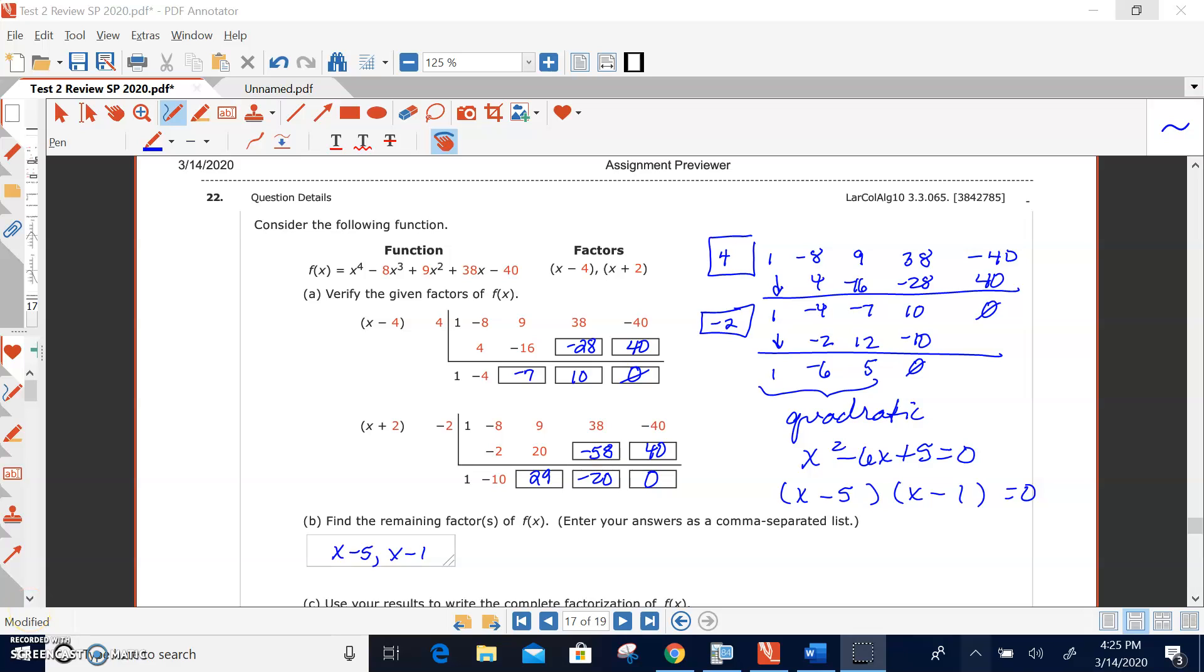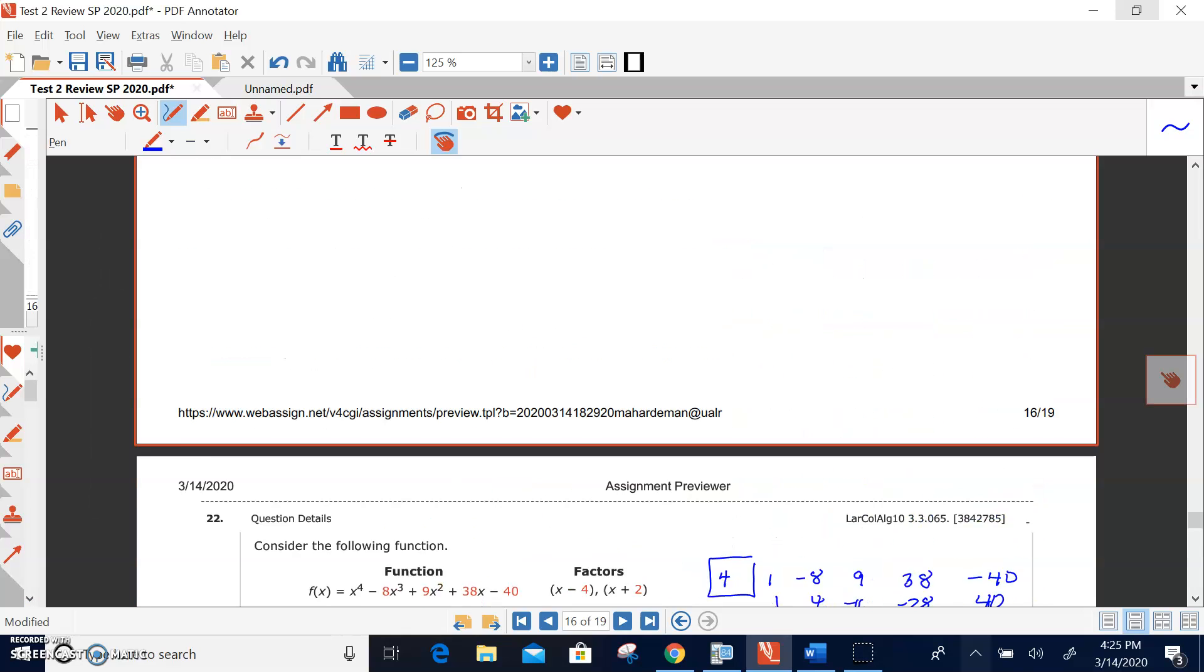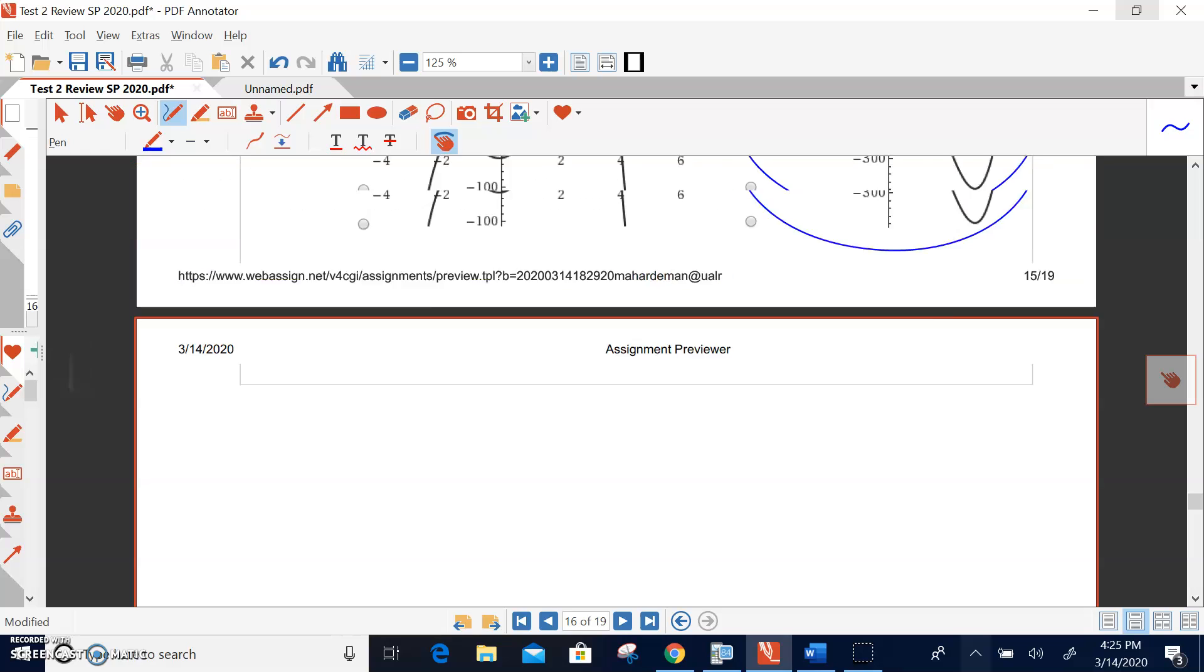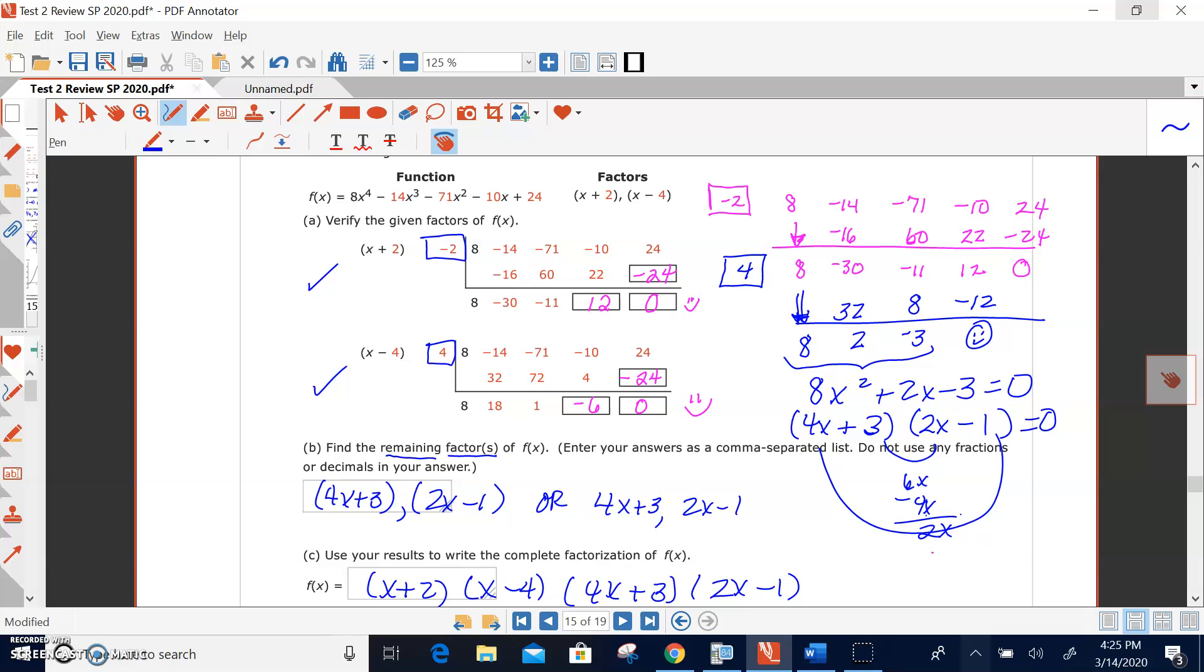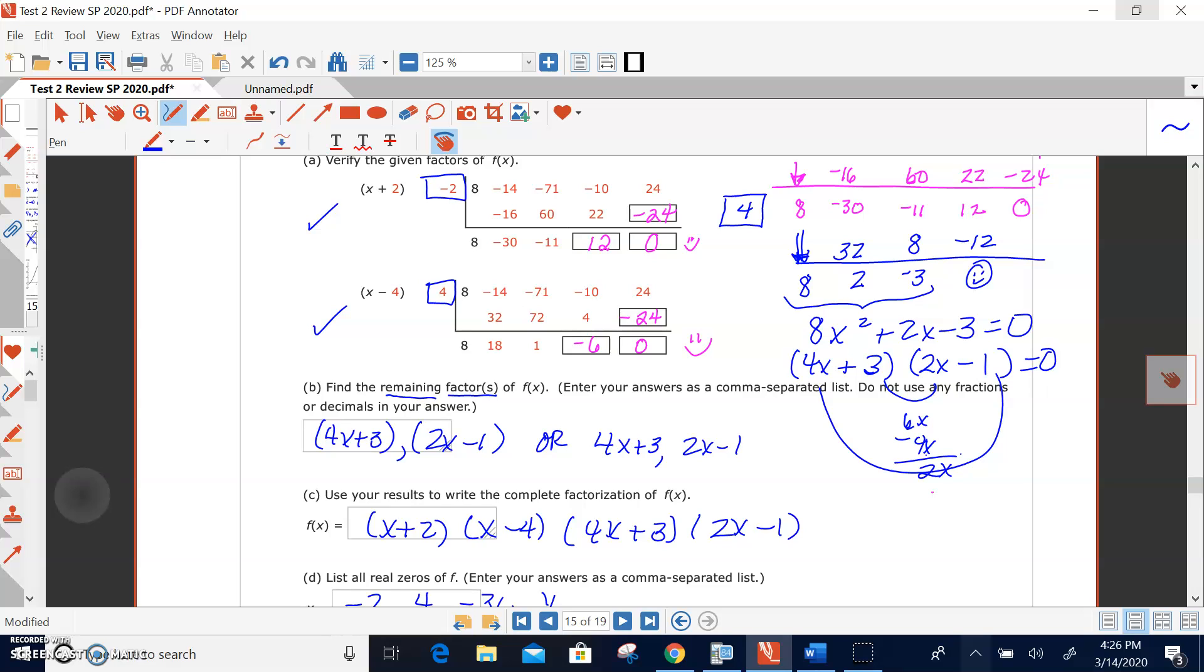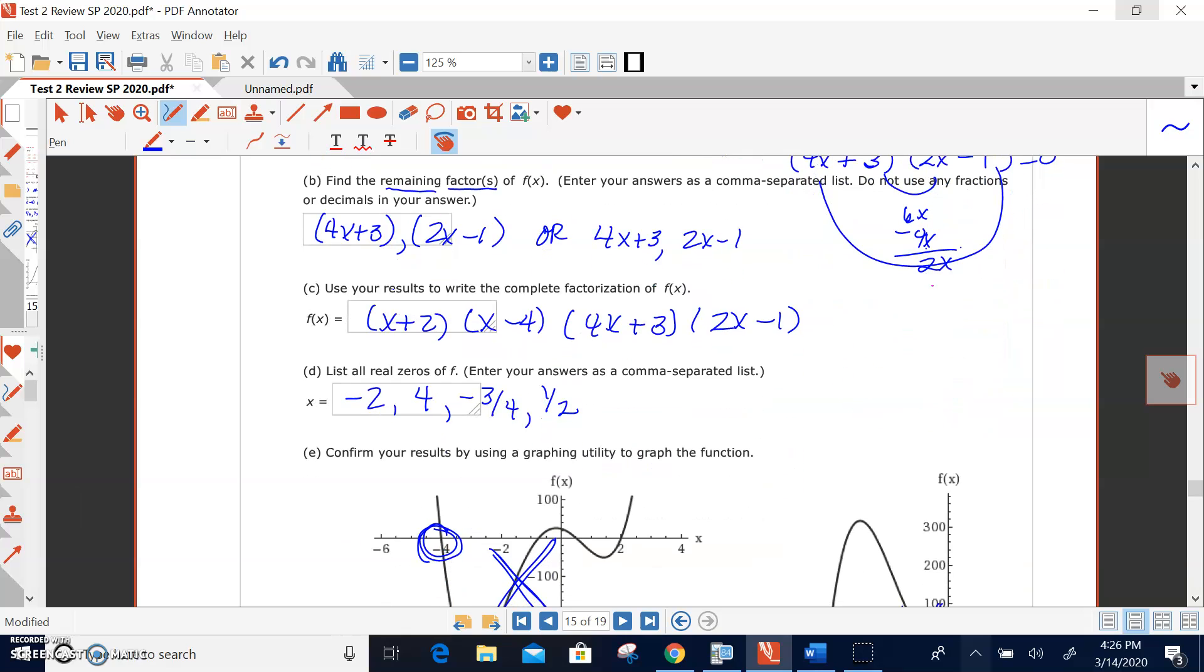We'll start this one with question 22, but let's refer back to 21. With completed problem 21, with some synthetic division showing that we had factors, going to do some repeated synthetic division so we can get it down to our quadratic. And once you have that quadratic, you can factor, and the goal was to find these remaining factors and then enlist those and then write it in completely factored form using the x plus 2 and the x minus 4, listing the zeros, and then graphing.